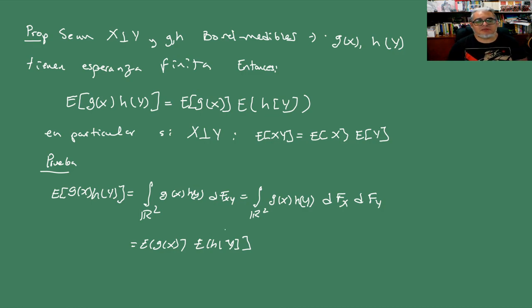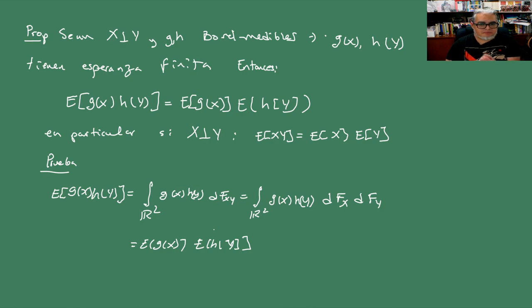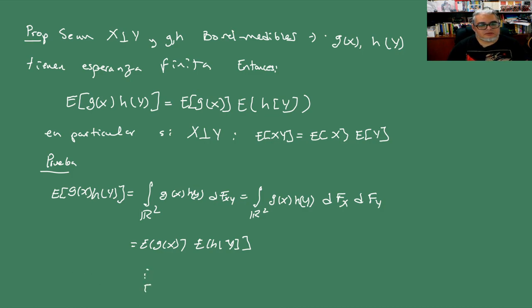¿Qué pasa en el caso de independencia? Podemos tomar G como simplemente X y H como simplemente Y, y tenemos garantizado el resultado. El argumento es fácil de ver.